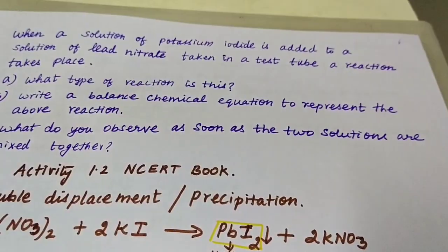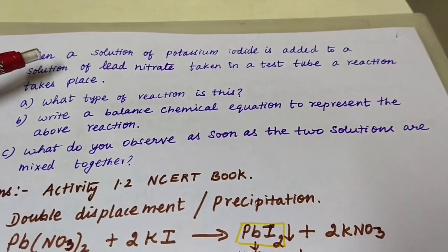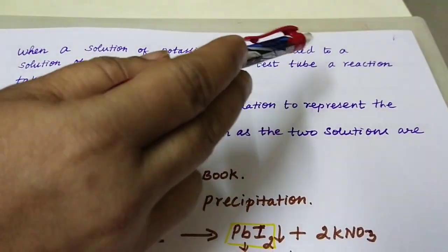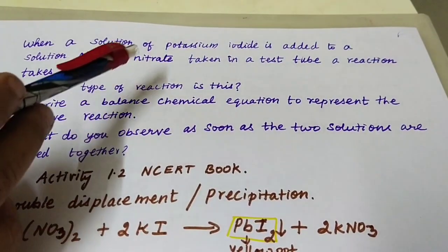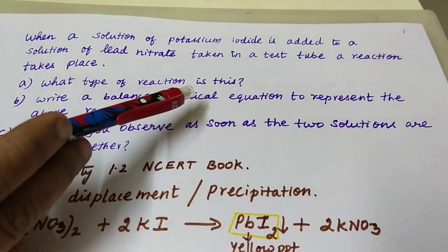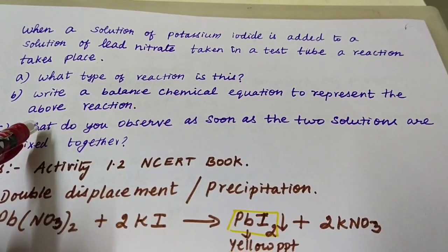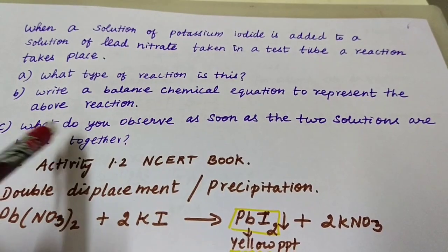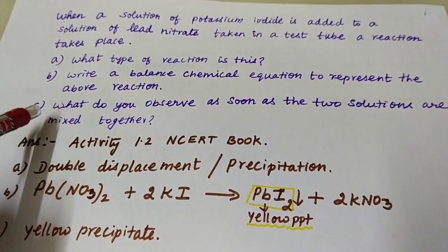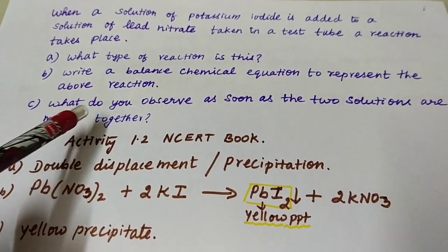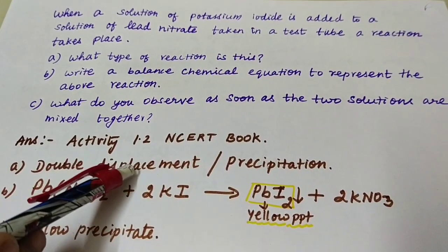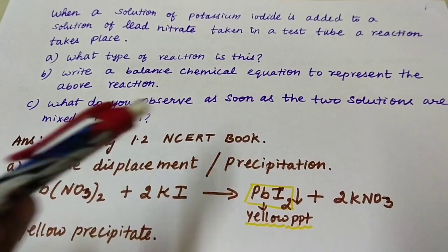The next activity: when a solution of potassium iodide is added to a solution of lead nitrate in a test tube, a reaction takes place. Questions: what type of reaction is this, write a balanced chemical equation, and what do you observe when the two solutions are mixed? This is from NCERT Activity 1.2. Since two compounds are mixed and exchange of partners takes place, it is a double displacement reaction, which is also a precipitation reaction.